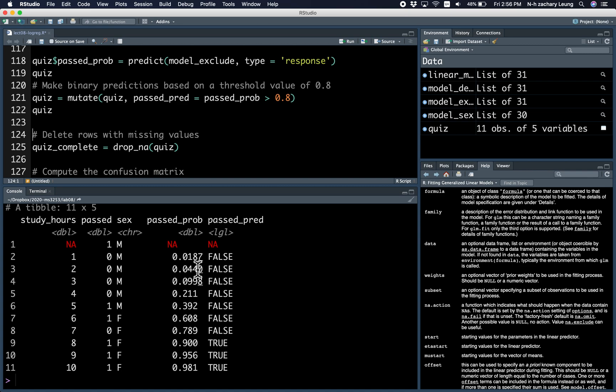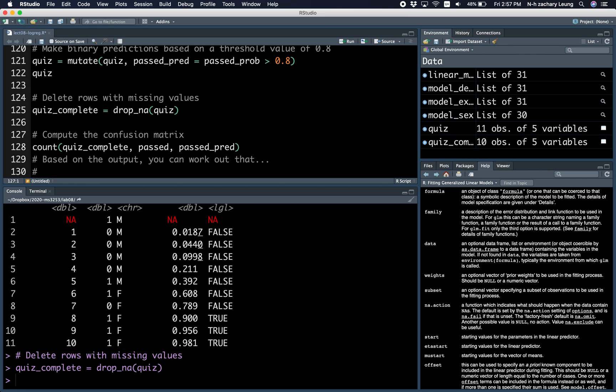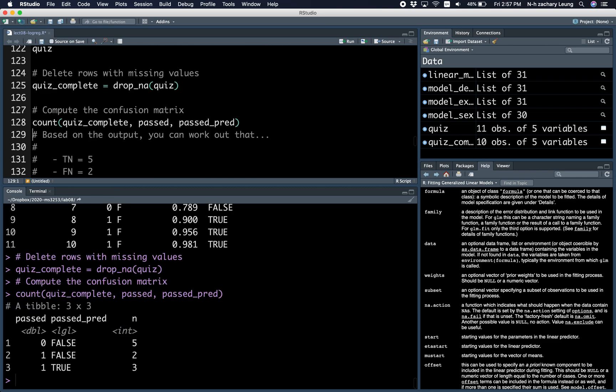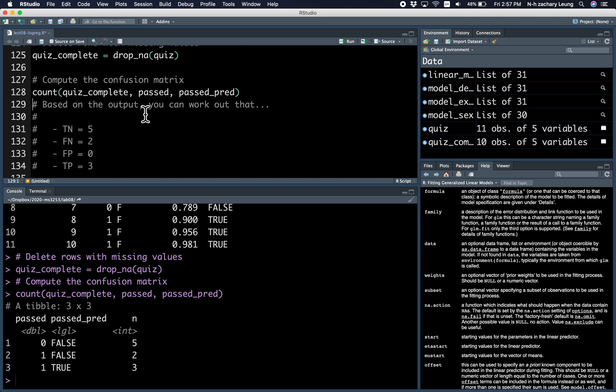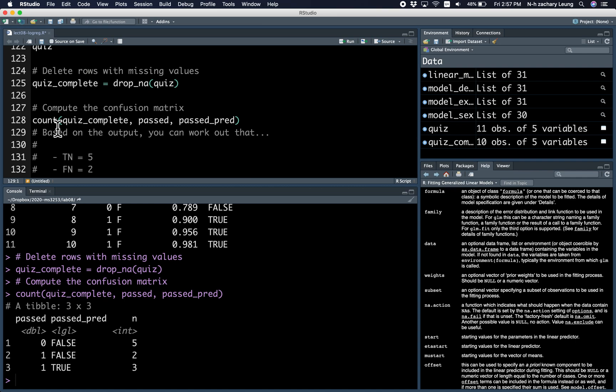Let's delete the rows with missing values using the drop na function. And we can compute the confusion matrix using the counts function.